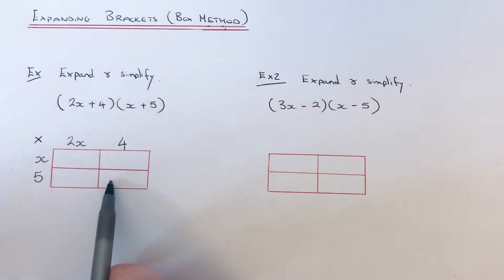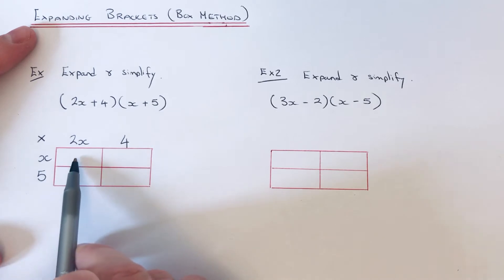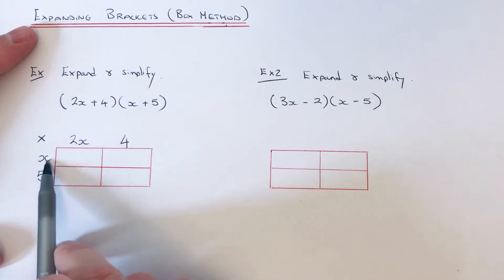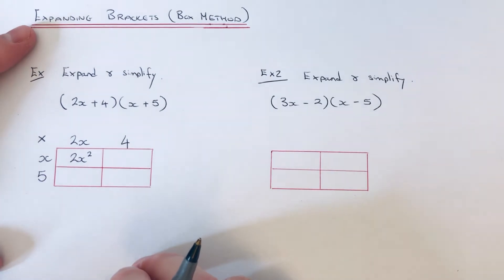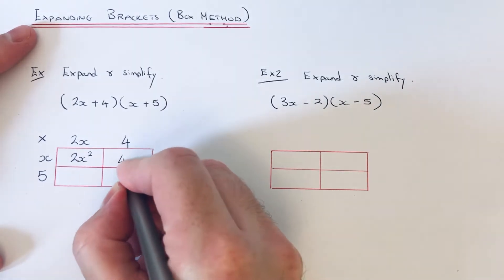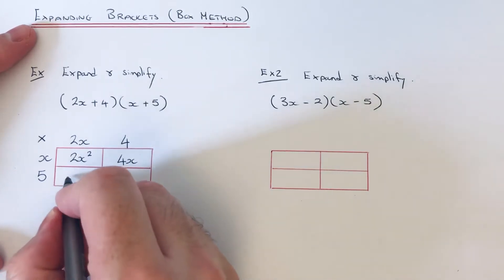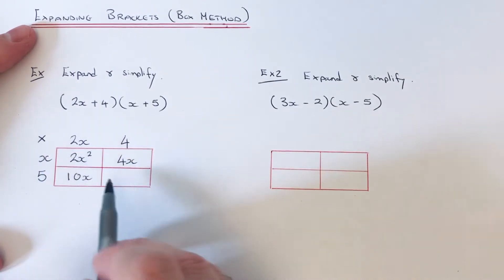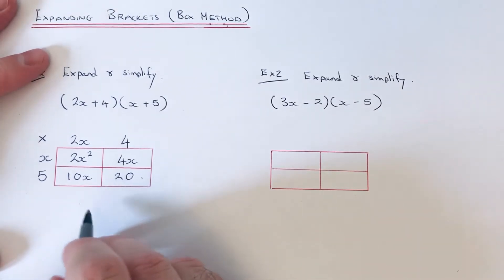We work out the numbers in the four boxes by multiplying the number at the top by the number on the side. So in the first box: 2x times x is 2x squared, because x times x becomes x squared. This box: 4 times x is 4x. This box: 2x times 5 is 10x. And our final box: 4 times 5 is 20.